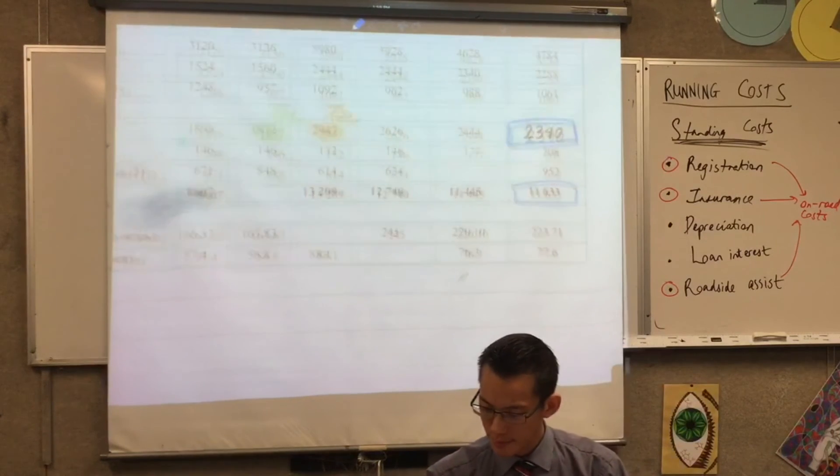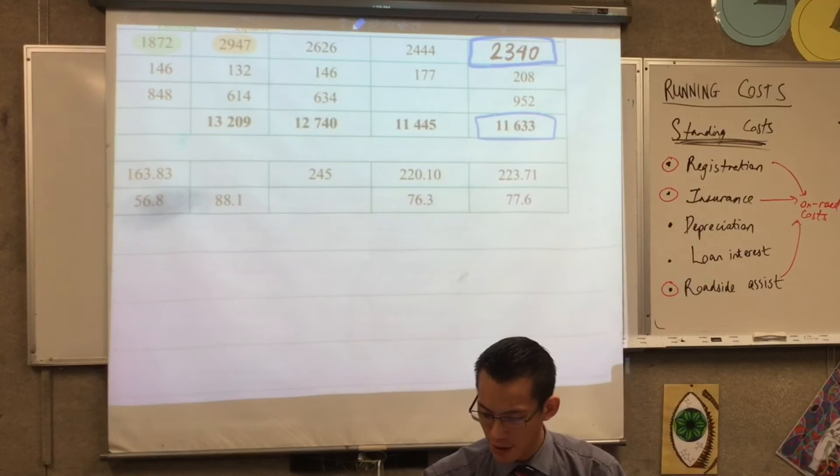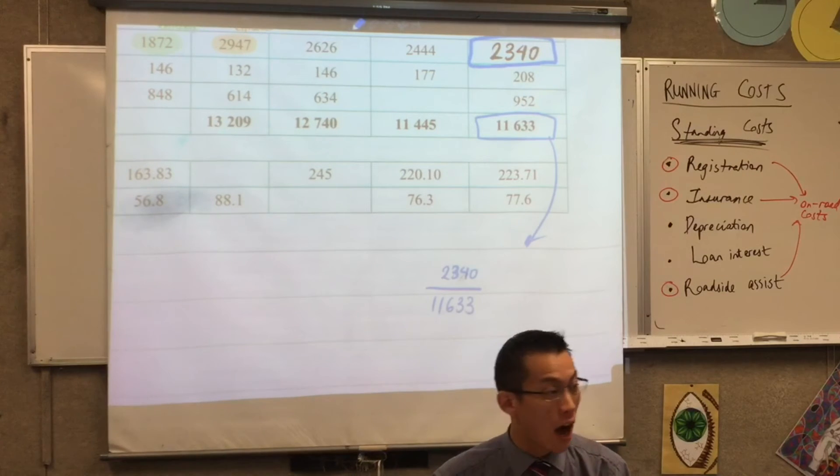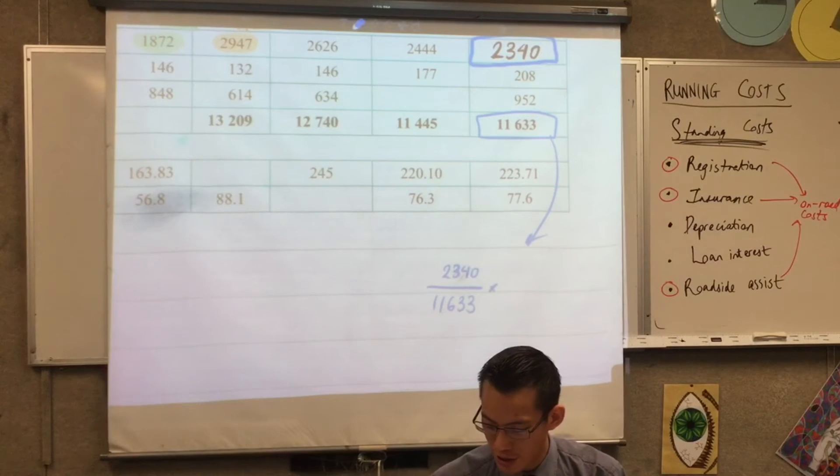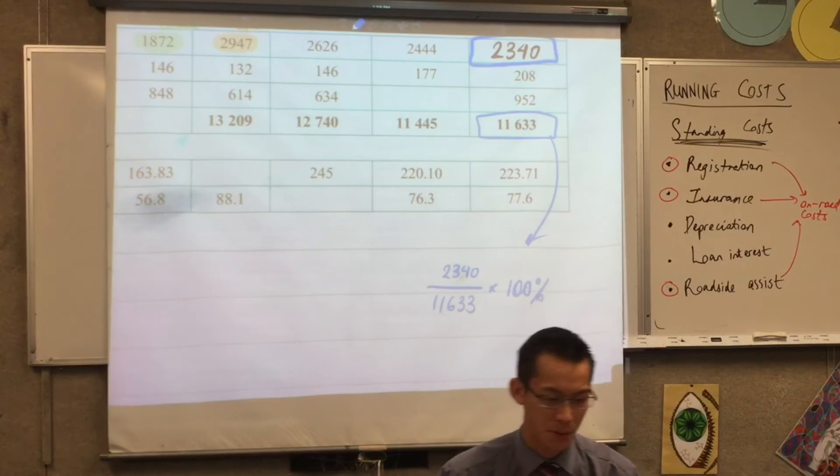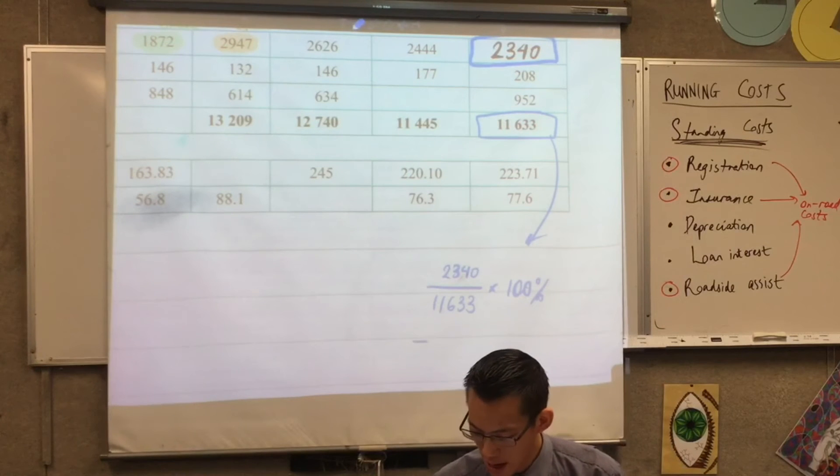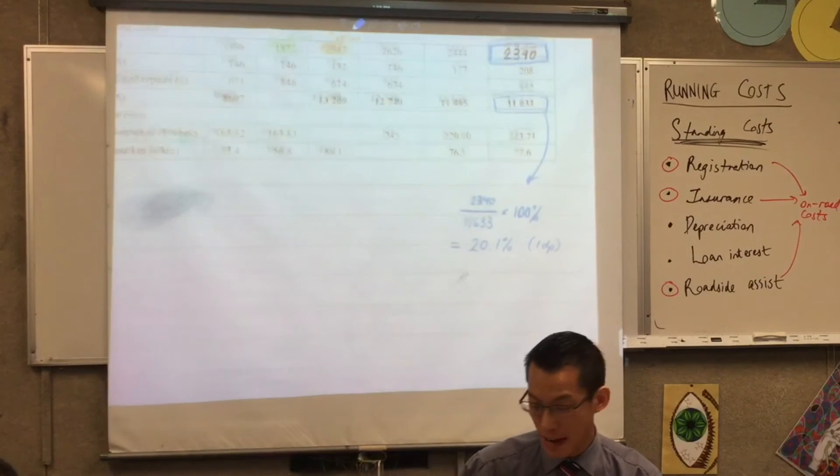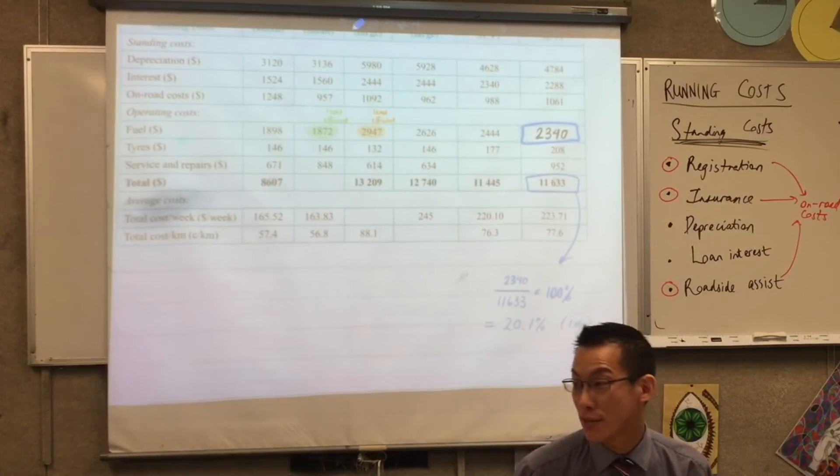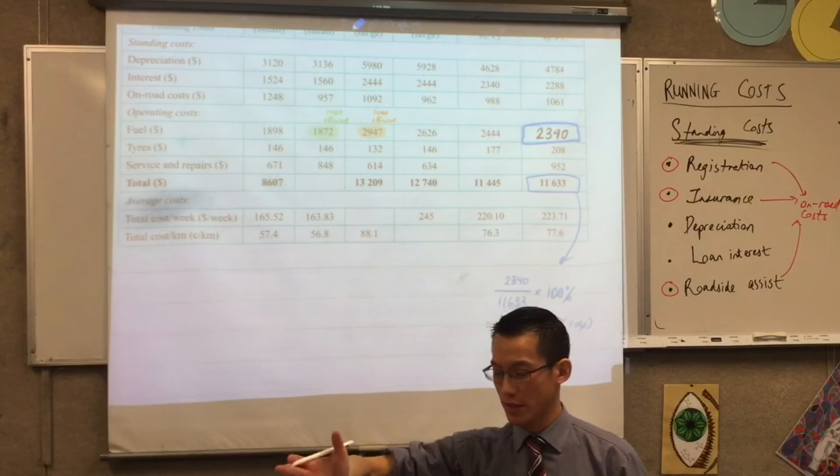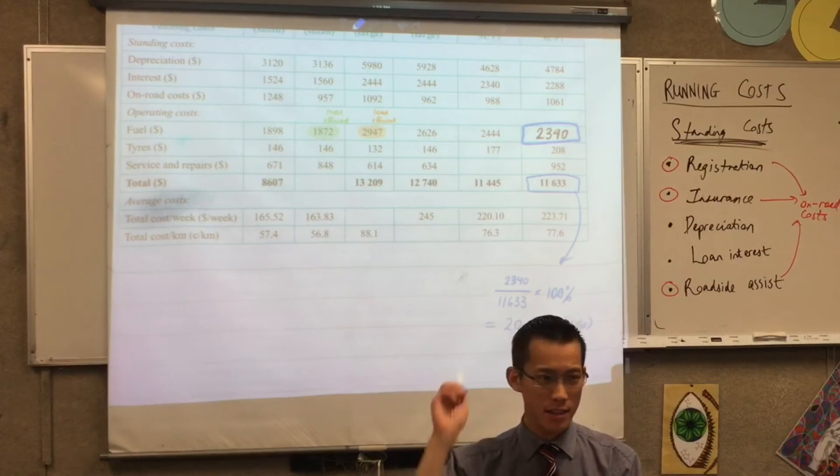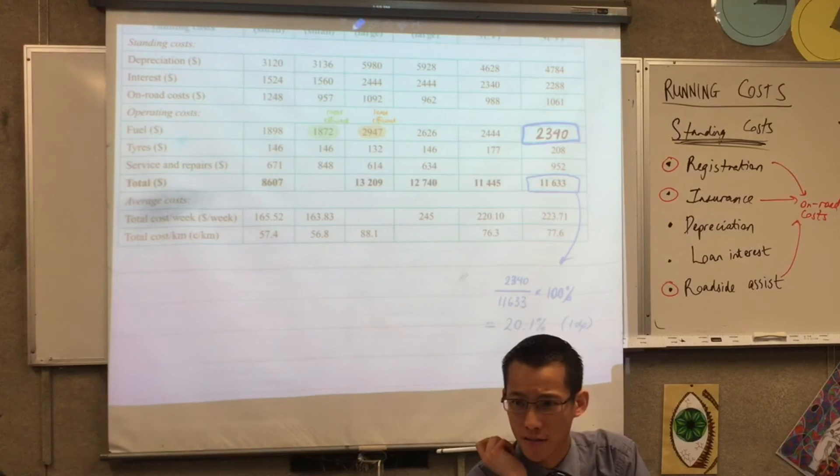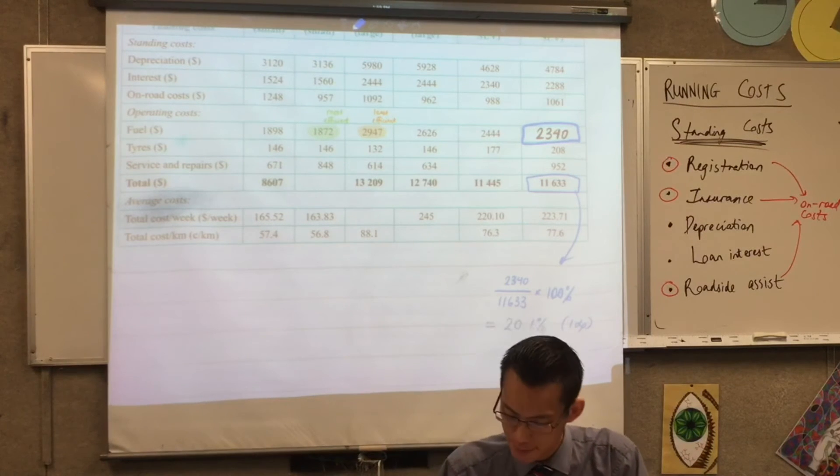How am I going to work out the percentage of the total cost? 2,340 over 11,633 times 100. Very good. Let's all write that down. I'm comparing it to the entire price - that's why I'm dividing by that number. And to turn that into a percentage, I'm multiplying by 100%. Give me one decimal point: 20.1%. That is a lot. And petrol is expensive. Whereas if you drive very little, this price is going to be a smaller percentage of the whole thing because other things like insurance and registration will be more expensive.